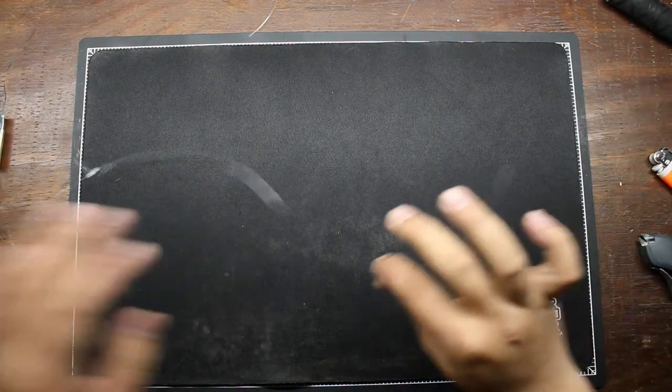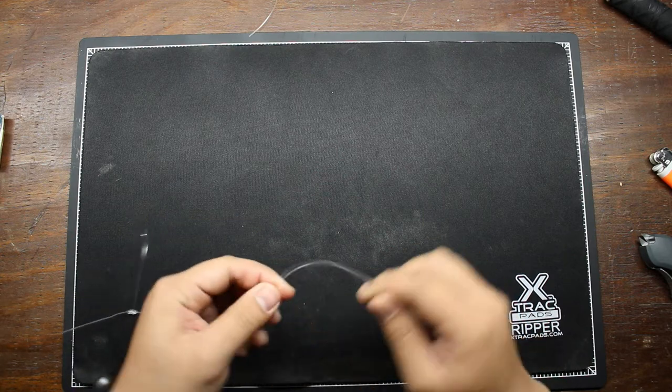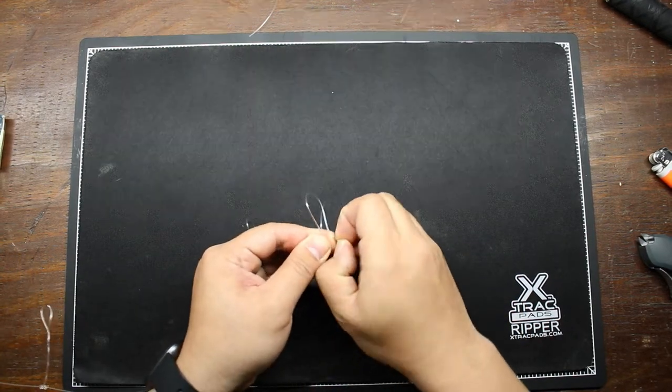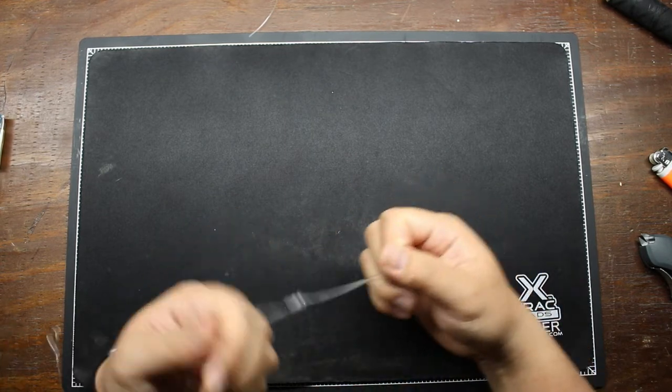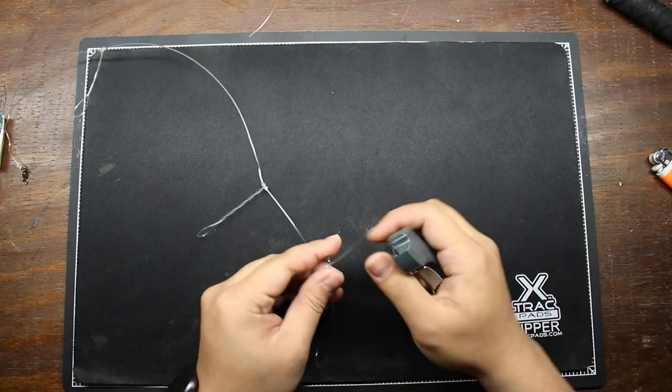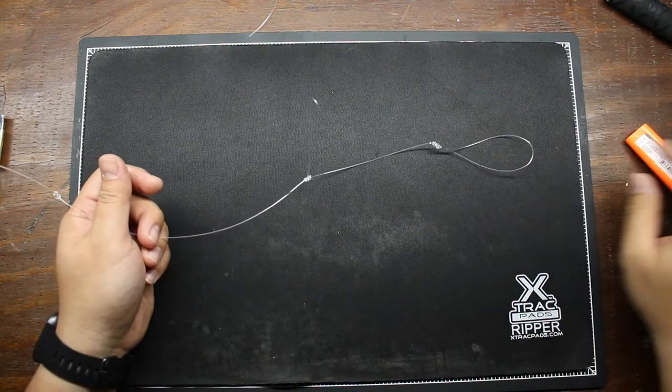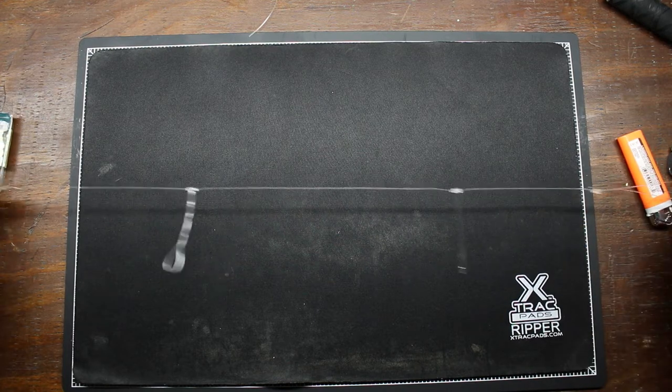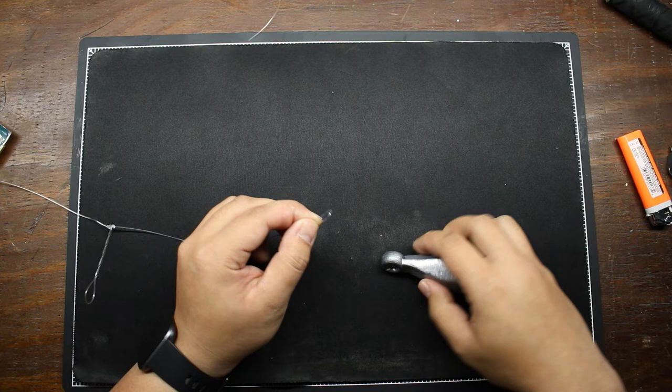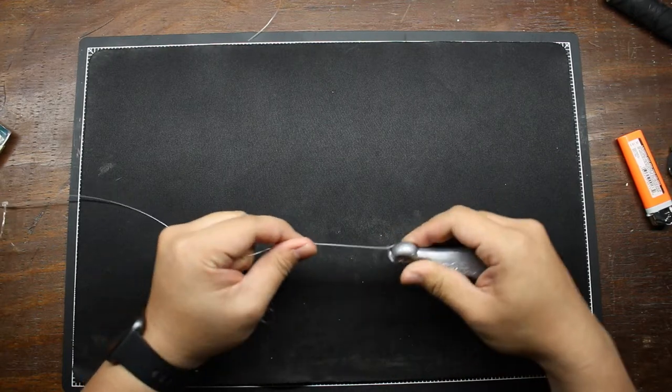So, from here, I'm going to make a simple overhand loop about two times. One, two. Pull it. Cut off the tag end. Burn it a little. And here, this is what the rig looks like. This section right here is where I attach my sinker.